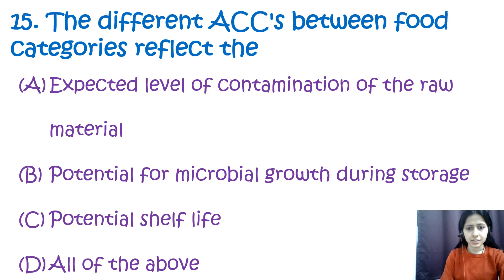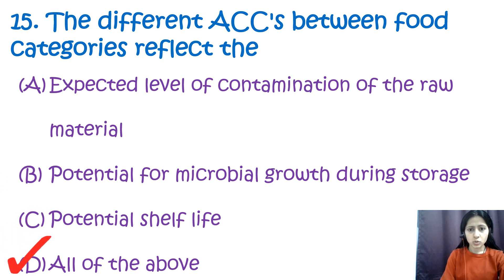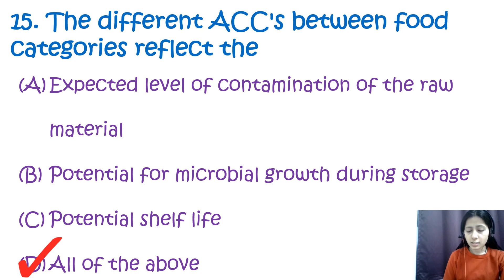Question number fifteen: the different aerobic colony counts between food categories reflect option A: the expected level of contamination of the raw material, option B: potential for microbial growth during storage, option C: micro potential shelf life, and option D: all of the above. The correct answer is D — all of the above. These counts also depend on the type of food, processing conditions, and storage conditions.